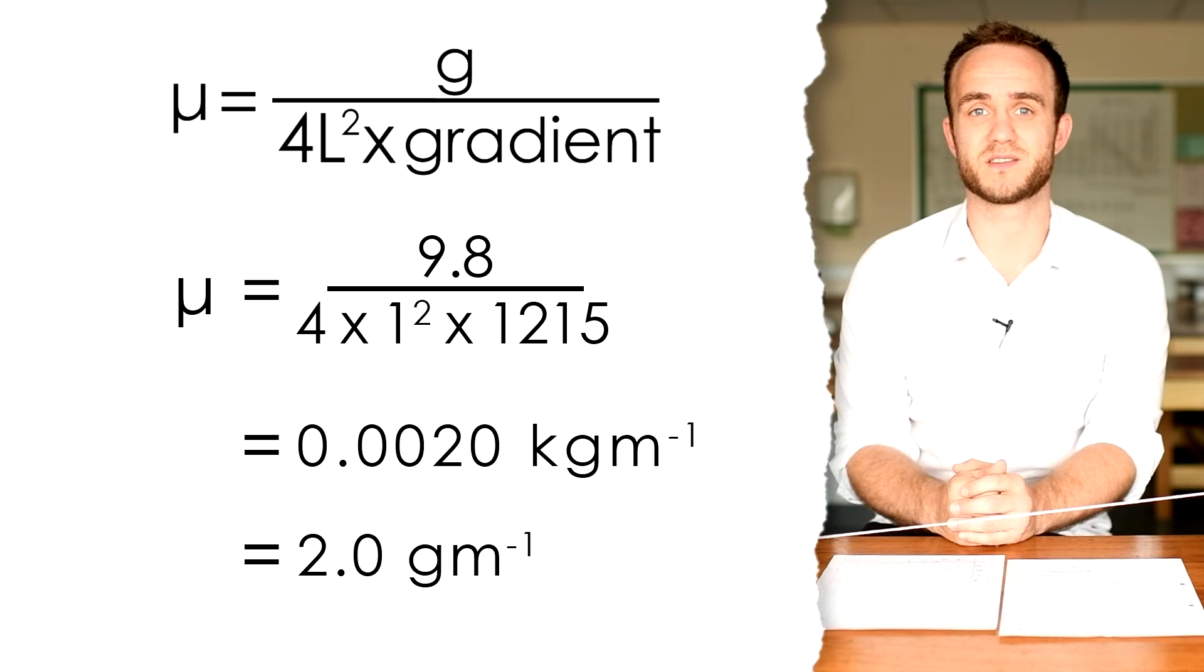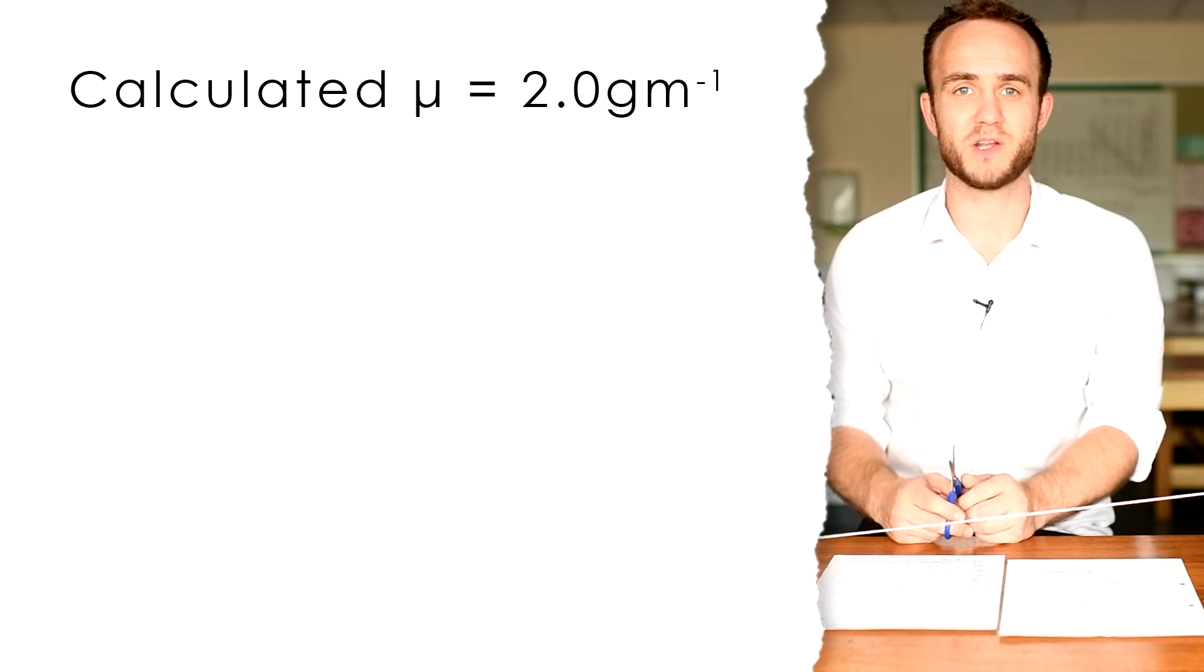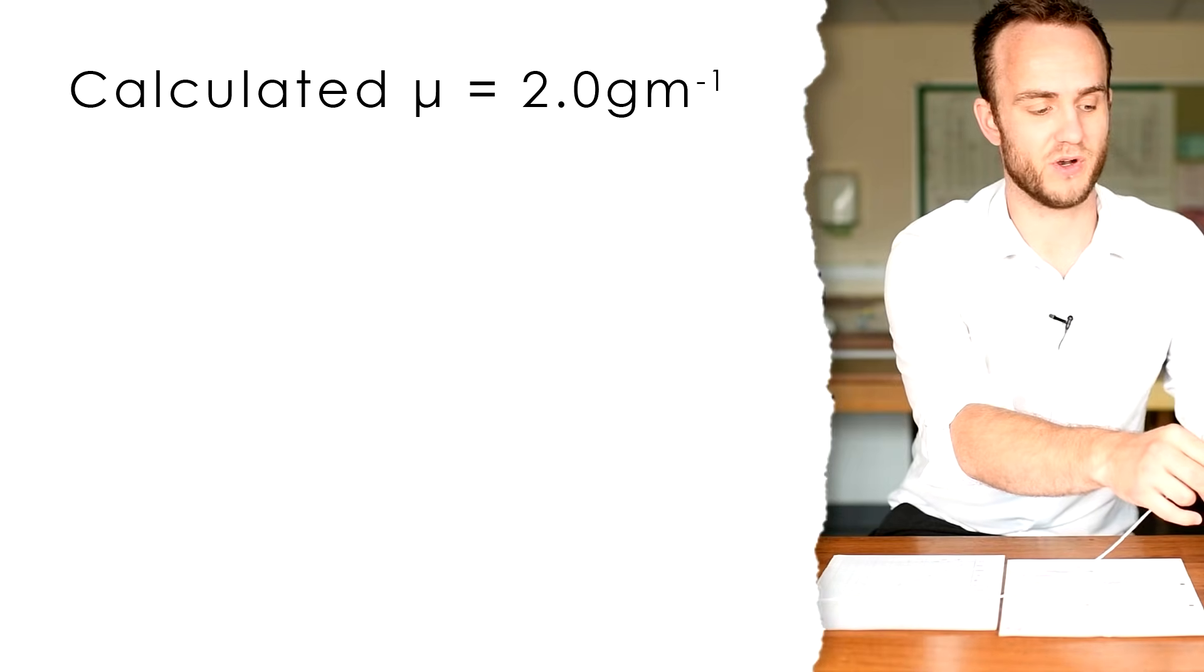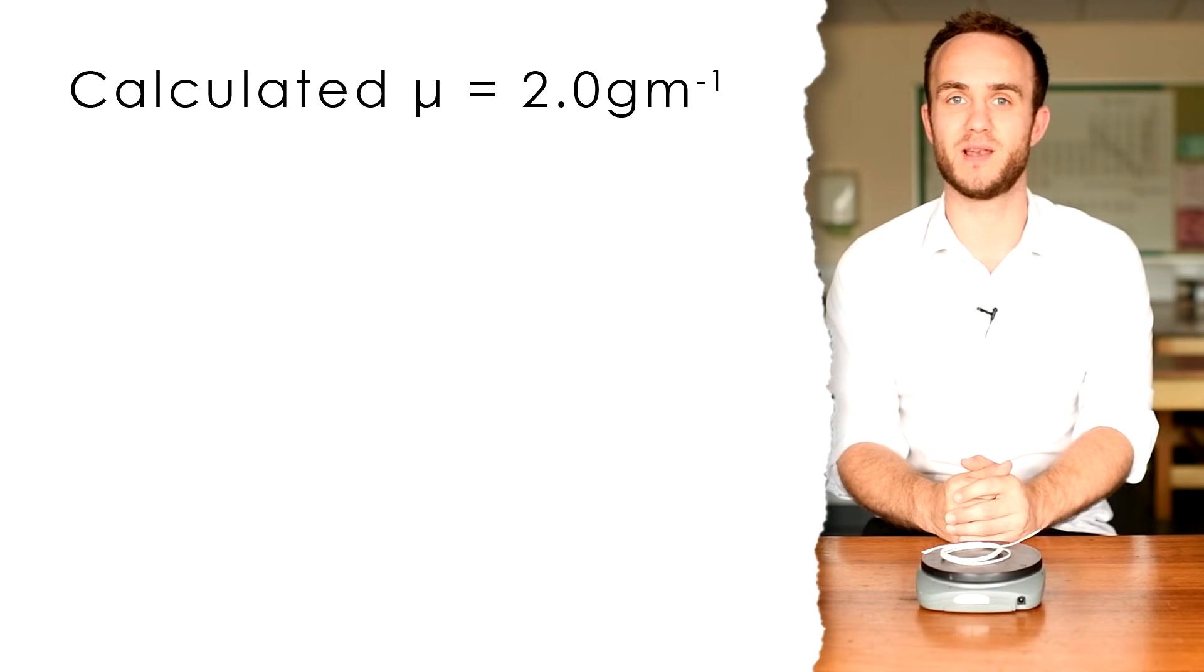So, our data is telling us that the mass per unit length of the string should be 2 grams per meter. Let's see if that's true. All I'm going to do is cut my piece of string where it reaches the pulley and where it comes off the oscillator. Putting the string on my balance, I can see that a meter length of this string has a mass of 1.6 grams.